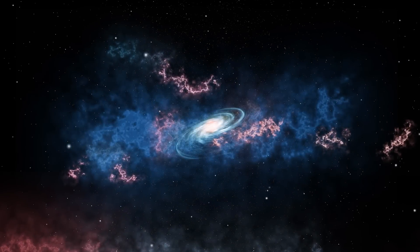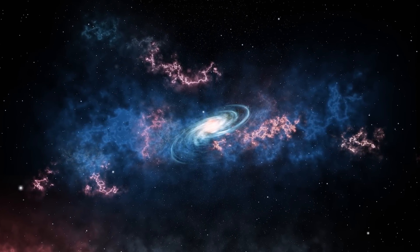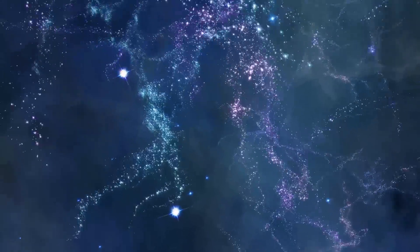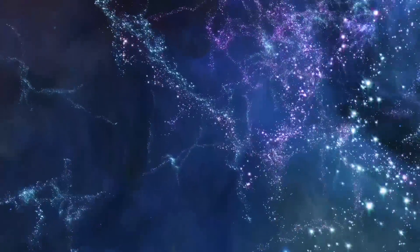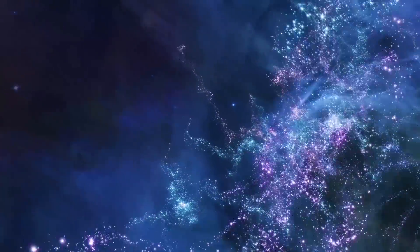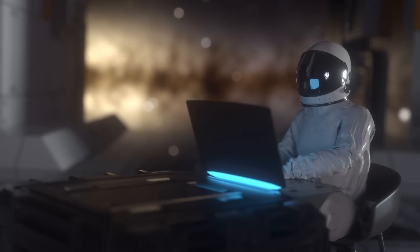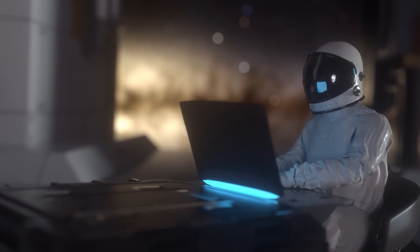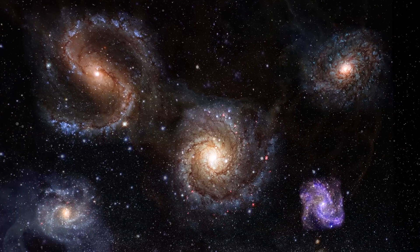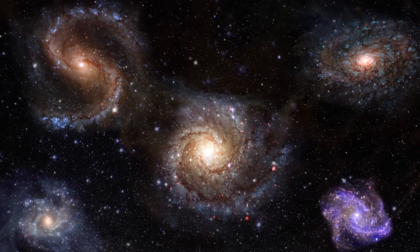To map out this intricate web, scientists have harnessed the power of advanced simulations and galaxy redshift data. These simulations are like cosmic time machines, allowing researchers to rewind the clock and visualize how galaxies formed and evolved over billions of years. By using powerful computer models, astronomers can create simulations that replicate the dynamic behavior of galaxies, showing us how they interact, collide and merge in a cosmic dance that spans eons.